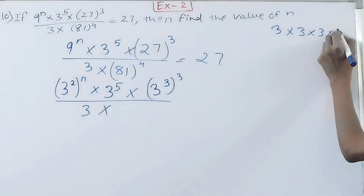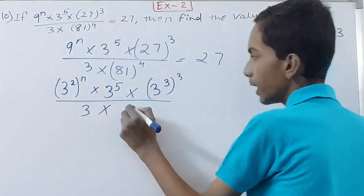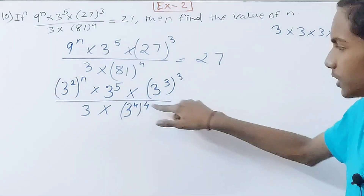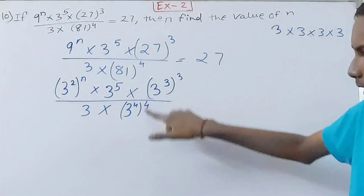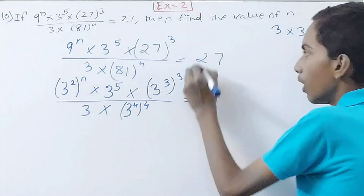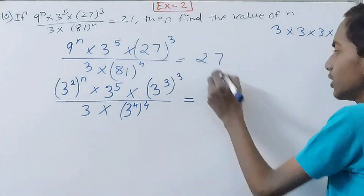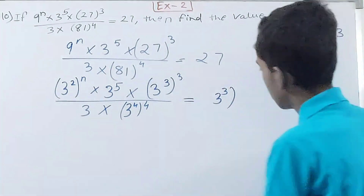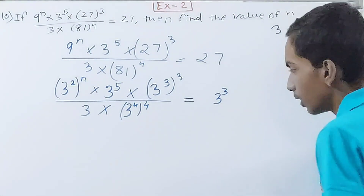So 81 to the power 4 becomes 3 to the power 4, raised to power 4 — keep in mind the first 4 is for 81, and the second 4 is the exponent that was already there. On the right-hand side, 27 is also 3 cubed. So now let's see what this expression looks like after all conversions.